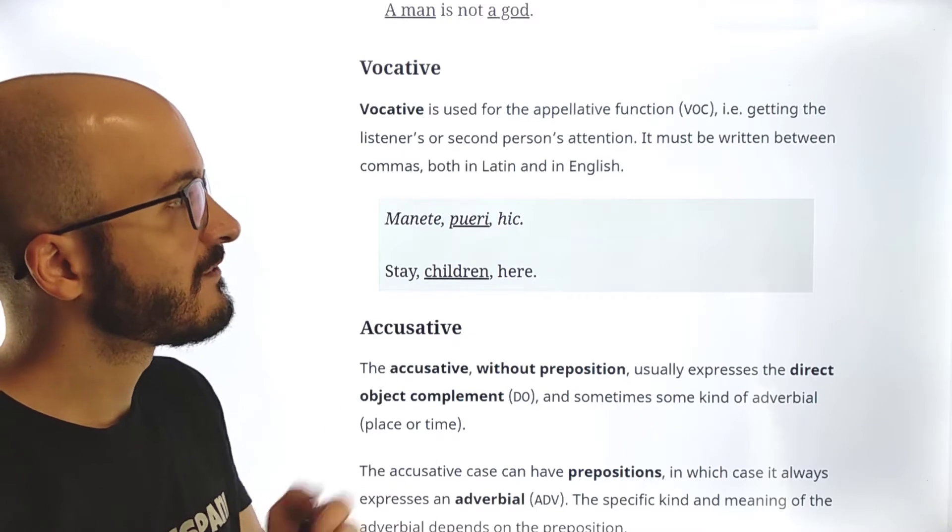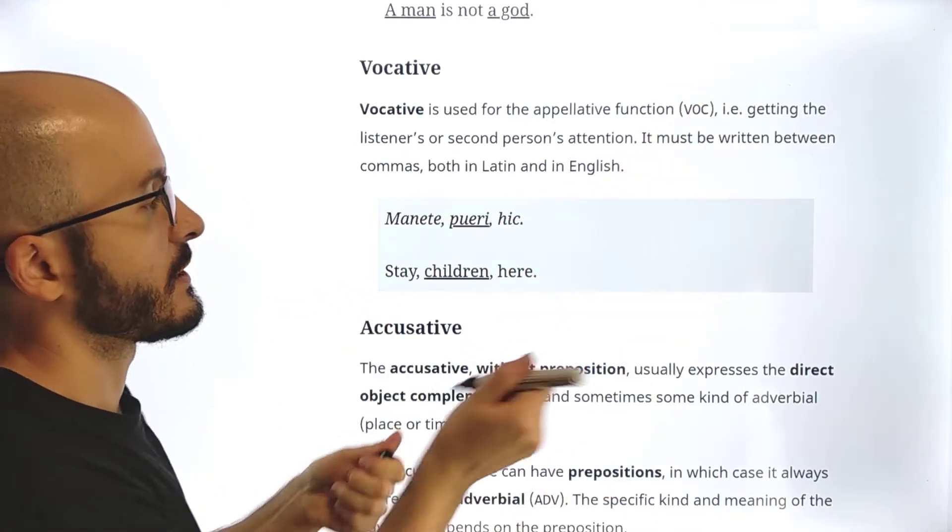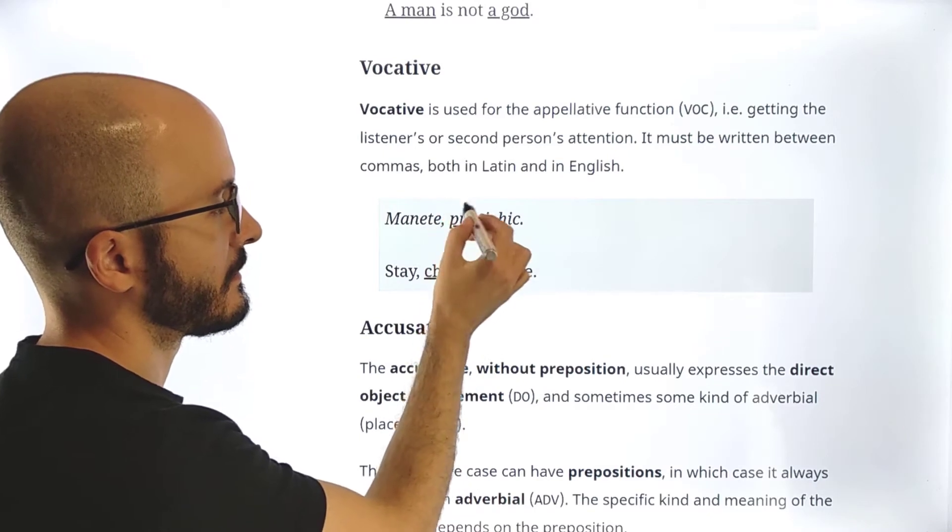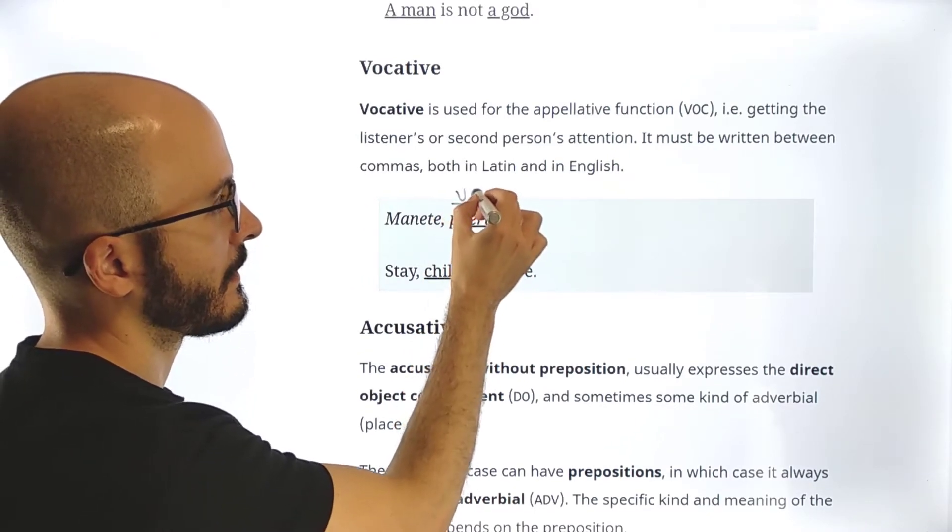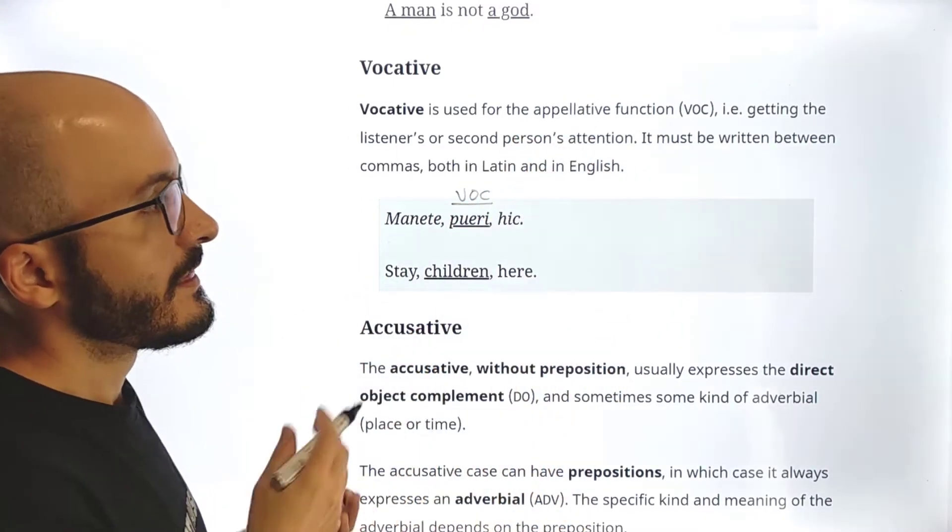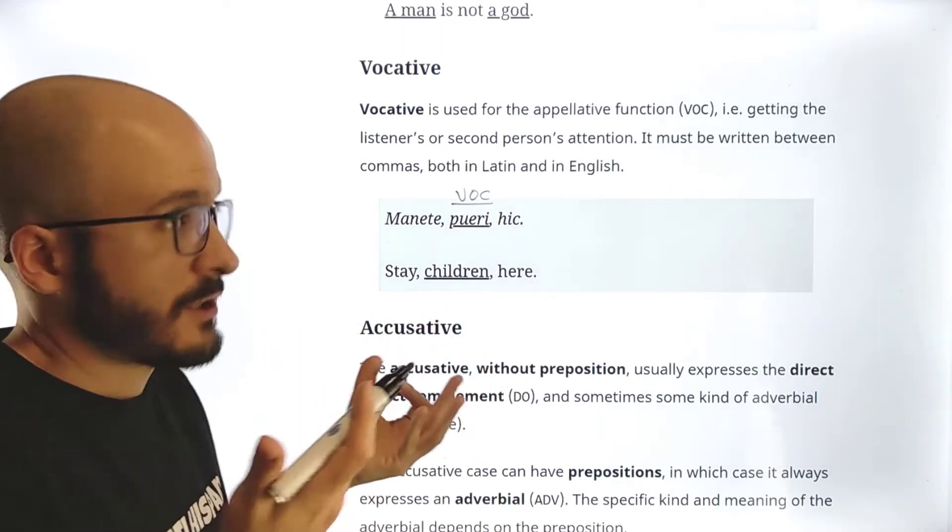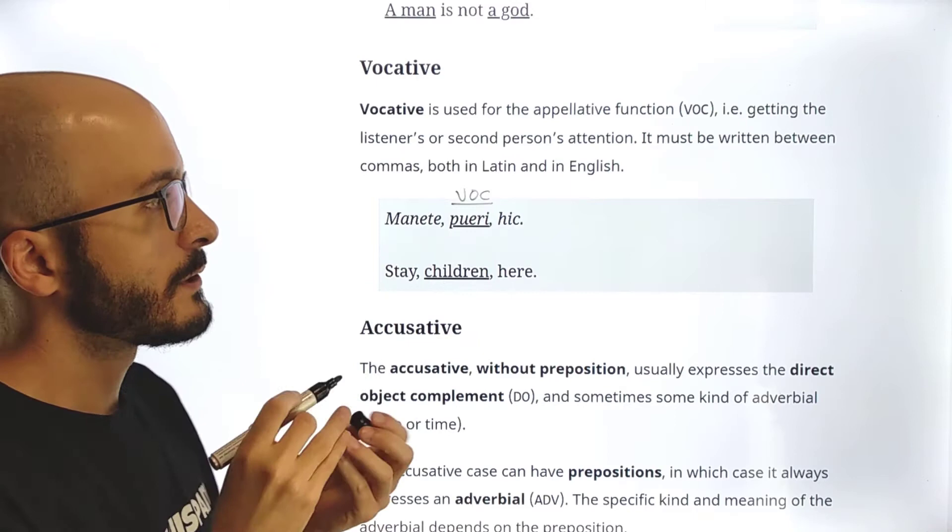Vocative is used for the appellative function. We will just be, so for example, in the analysis, in the syntactic analysis, we will be just saying voc, because appellative function is too long. And what is this appellative function, by the way? Getting the listener, the listeners, or second person's attention.